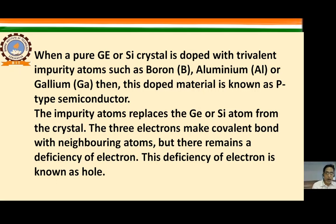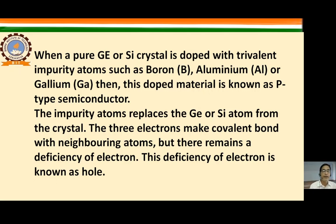Impurity atoms such as boron (B), aluminum (Al), or gallium (Ga) produce p-type semiconductor. The impurity replaces the germanium or silicon atom; three electrons make covalent bonds with neighboring atoms, but there remains a deficiency of one electron. This deficiency of electron is known as a hole.